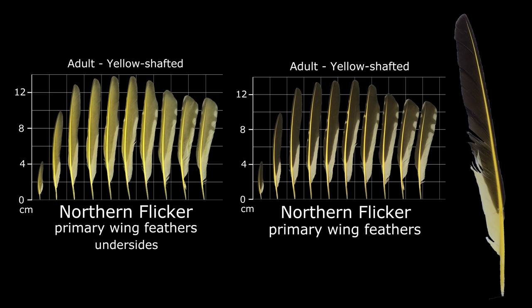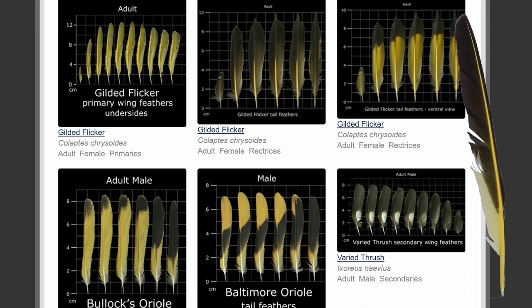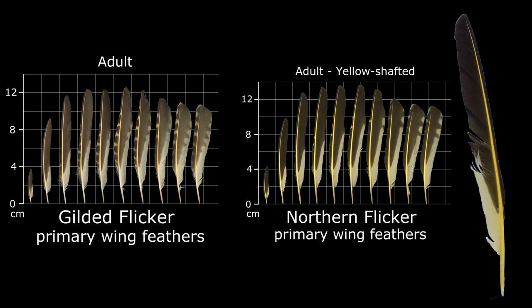Our feather most definitely looks like the Northern Flicker, and maybe even the Gilded Flicker. But the Gilded Flicker's feathers are too small and the dark section isn't quite dark enough to match ours. Plus, I'm in Northern Virginia and not in the West Coast range of the Gilded Flicker.